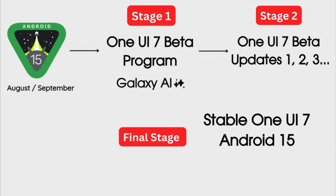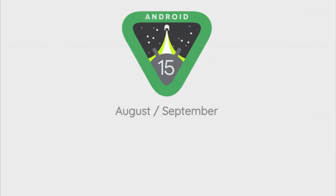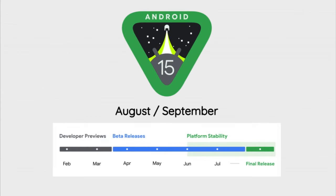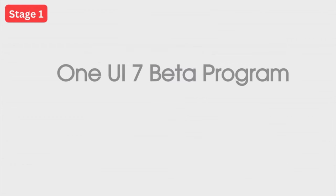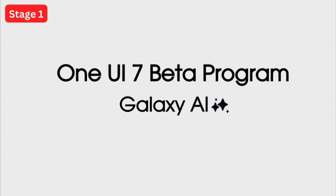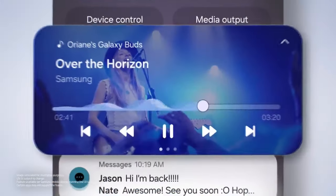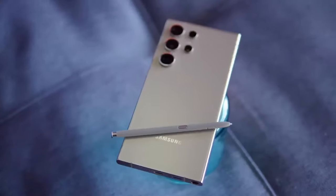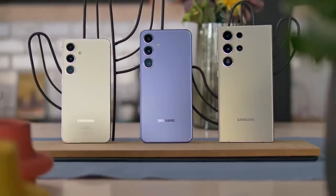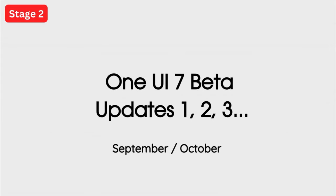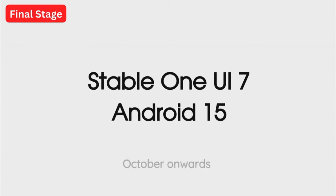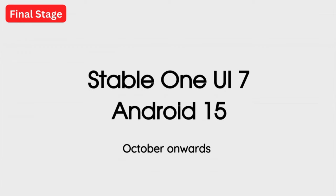Let's take a quick look at how Samsung releases One UI updates. Google will release the official Android 15 update sometime in August or September, and just after that, Samsung will announce the One UI 7 beta program for their flagship smartphones. That is when we will also get the official first look at One UI 7 and its features. Samsung will test the One UI 7 beta on their S series flagships by releasing a couple of beta updates, and after finishing beta testing, they will roll out the stable One UI 7 Android 15 update to eligible Galaxy smartphones.